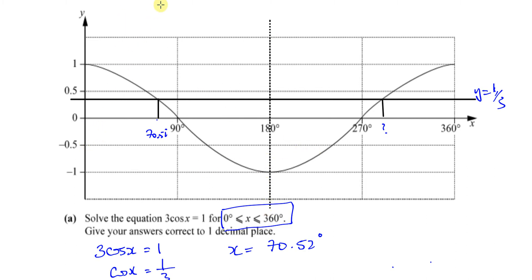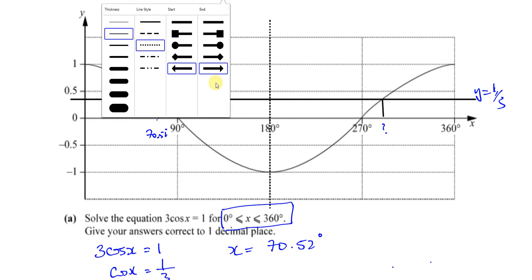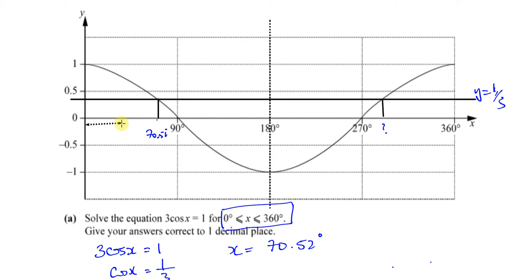The distance between that angle and zero must be the same as this distance here because it's symmetrical. This distance between here and here must be also 70.52. So basically if we do 360 minus 70.52, we'll find what this angle is. The other angle is 360 minus 70.52.